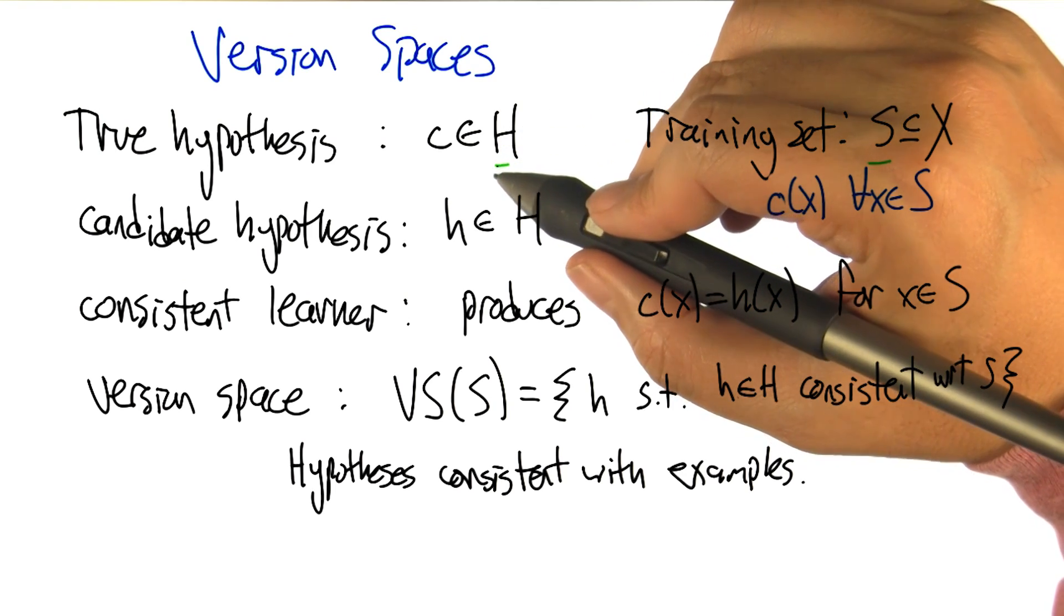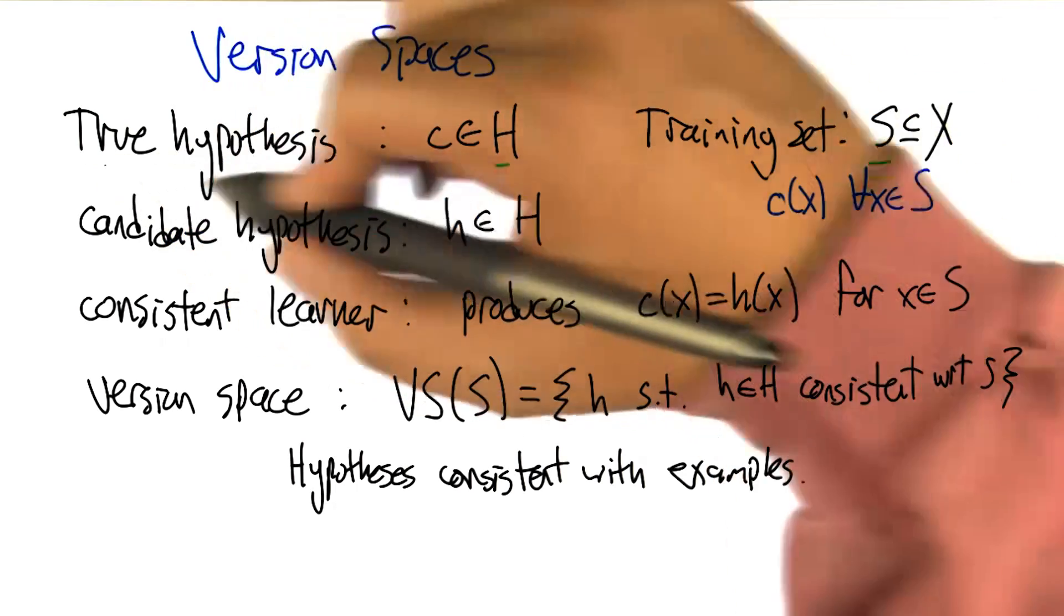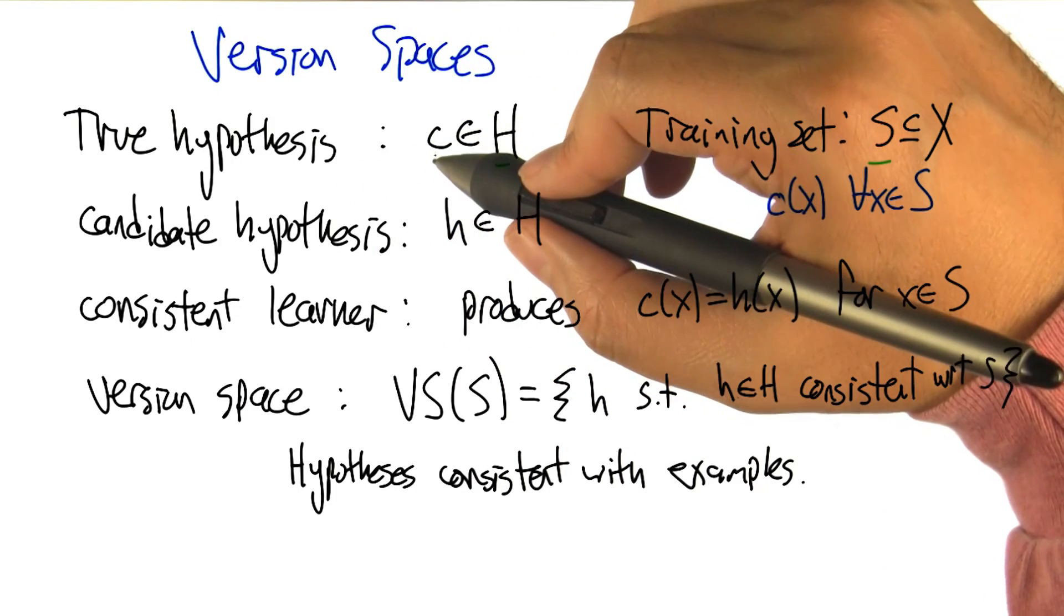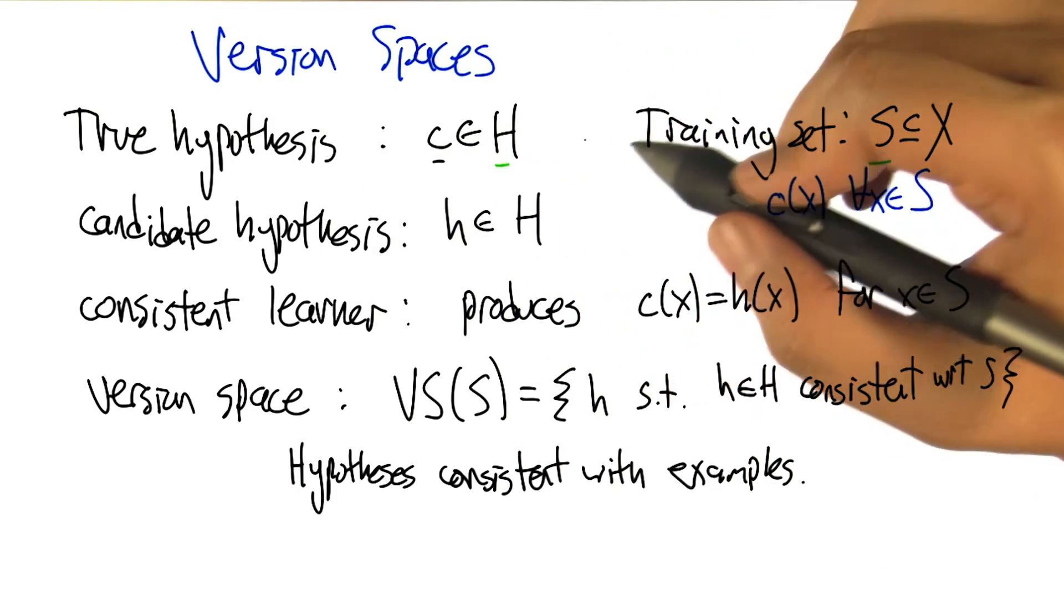So imagine we've got some hypothesis space H, capital H, and a true hypothesis that we're trying to learn, C of H. It's also sometimes called a concept.